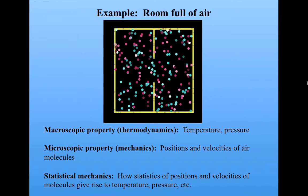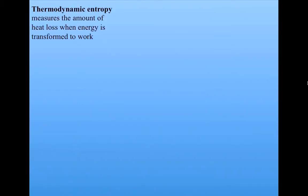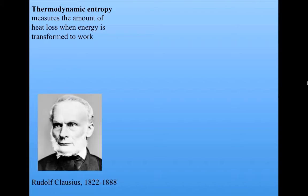Now we can talk about the different notions of entropy in thermodynamics and statistical mechanics. In thermodynamics, as we talked about already, entropy measures the amount of heat loss when energy is transformed to work, that is, to do useful things. This notion of entropy was first proposed by Rudolf Clausius, a German scientist who worked in the 1800s.